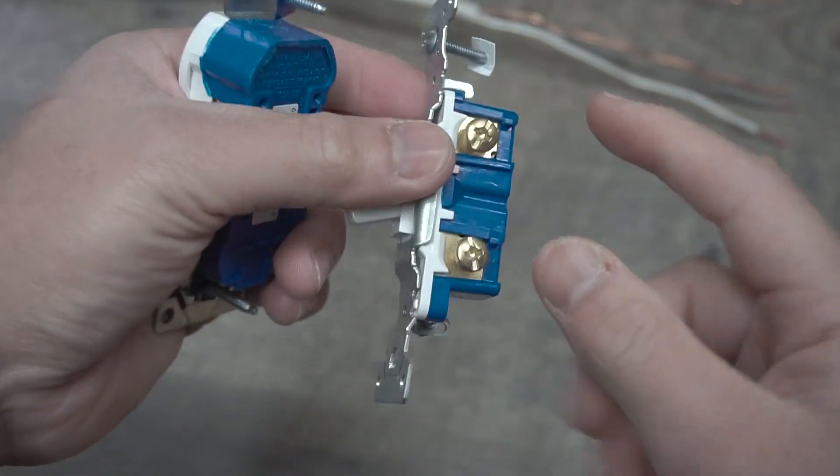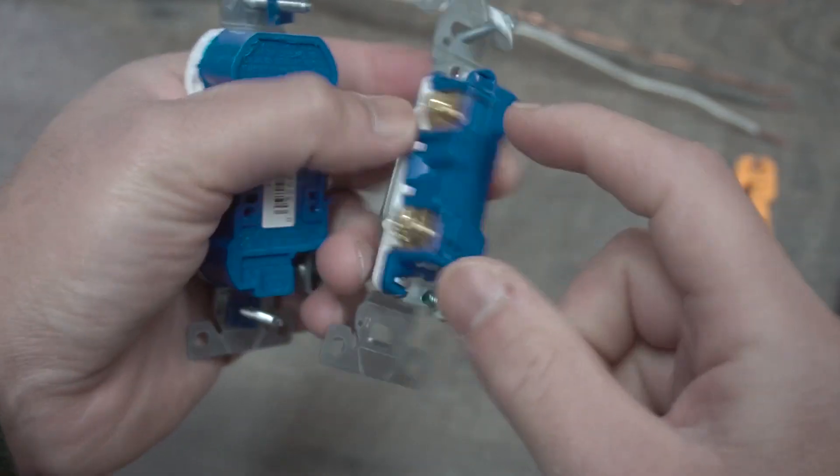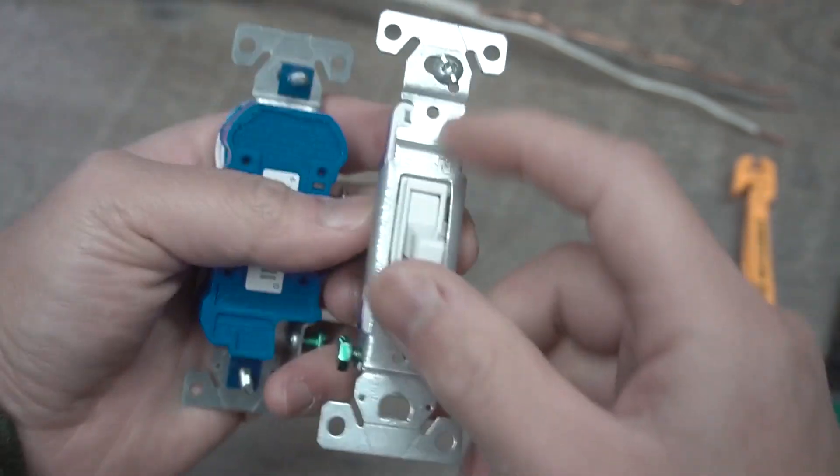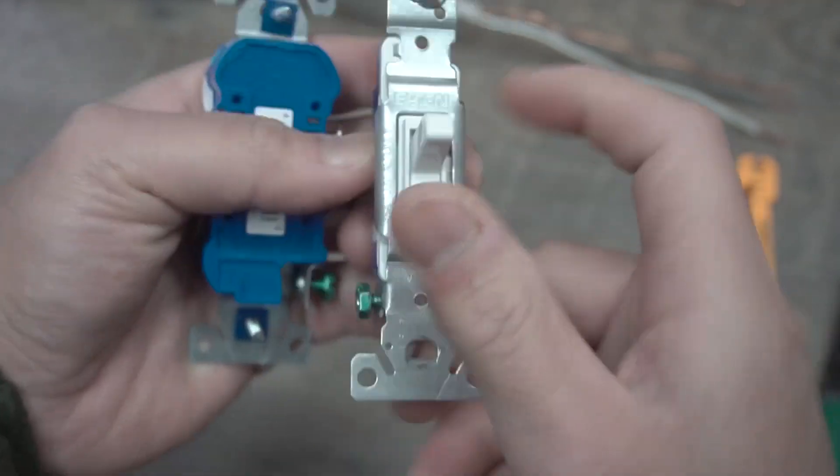But in this case, we're just going to stick with a common residential like this one and a common switch, single pole switch, which contains two brass, which is for two hot terminals and one ground. And that's pretty much it. Simple as that. And it has an on and off switch.